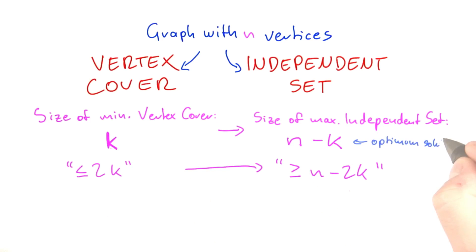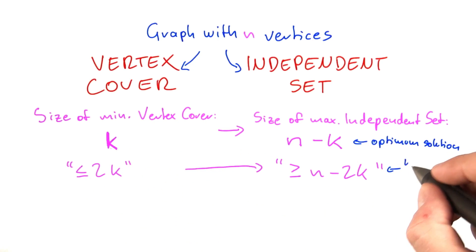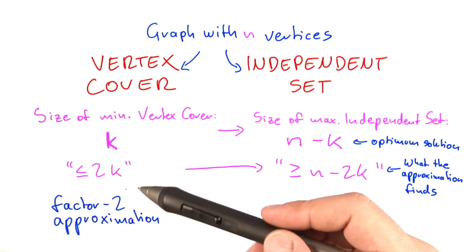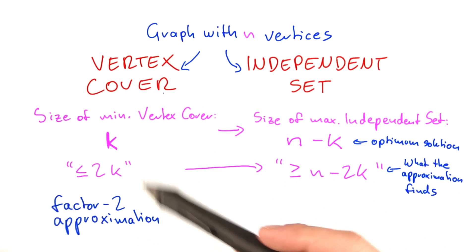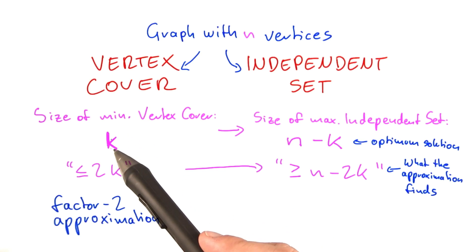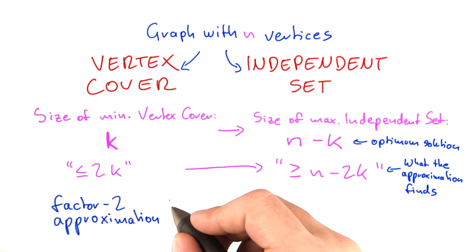This would be the optimum solution, and this would be what the vertex cover factor 2 approximation finds. So what about the approximation factor? You already know that for vertex cover we have a factor 2 approximation. The way you arrive at 2 is, since this is a minimization problem, you take what the approximation finds and divide it by the size of the optimum solution. So it's 2k over k, which equals 2.